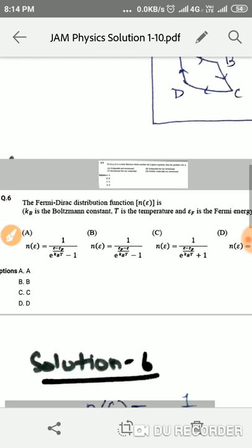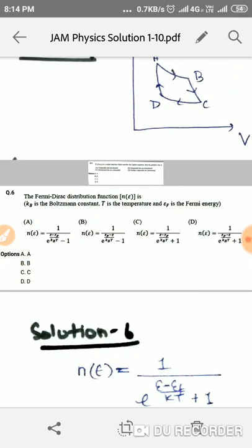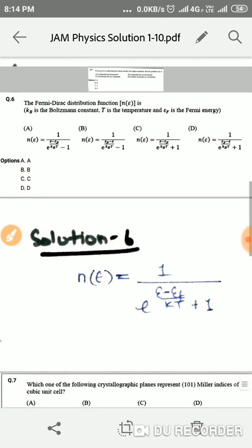In Fermi-Dirac distribution, we have to find the function n(E). This was a formula-based question. In this case, option C is the right one: one over exponential (E minus E_F over kT) plus one.